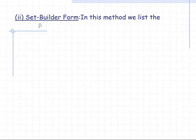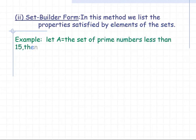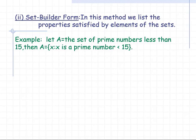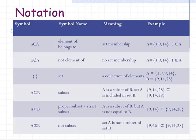The second method is the Set Builder form. In this method we list the properties satisfied by the elements of the set. For example, if A is the set of prime numbers less than 15, then A can be written as A = {x : x is a prime number less than 15}, where the colon stands for 'such that'.